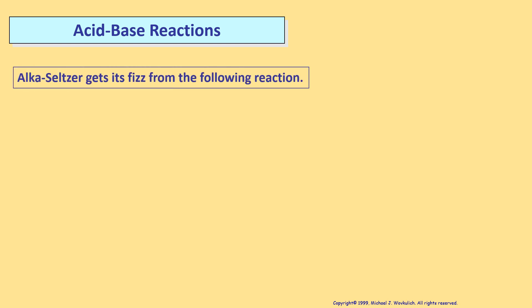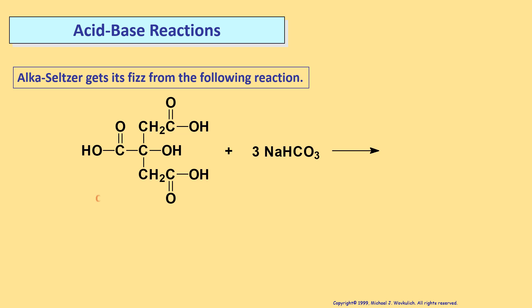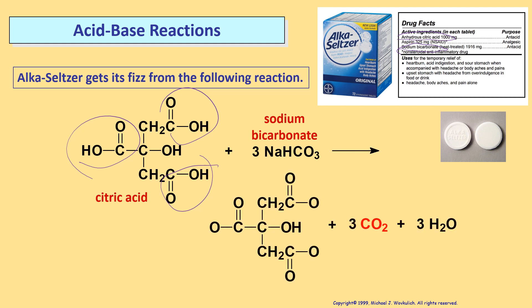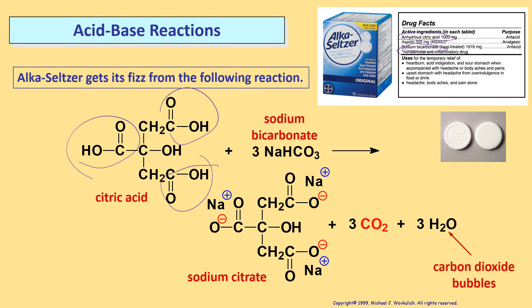Here's another acid-base reaction that you may have seen a commercial for — Alka-Seltzer. This is citric acid, a carboxylic acid with three carboxylic acid groups on it, so we need three equivalents of base. The base is sodium bicarbonate, also known as baking soda. So why aren't they reacting in tablet form? They need water as a medium. When you put them into water, all the H's of the acids come off, all the metals from the bicarbonate go on, and you get sodium citrate and carbon dioxide — that's the bubbles. It really makes carbonic acid first, but carbonic acid breaks down into carbon dioxide and water.